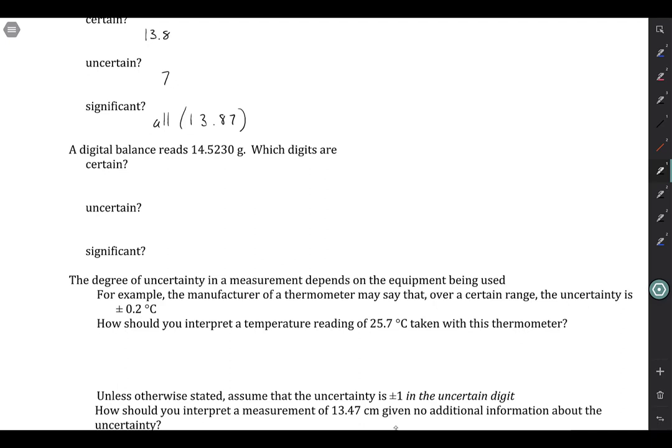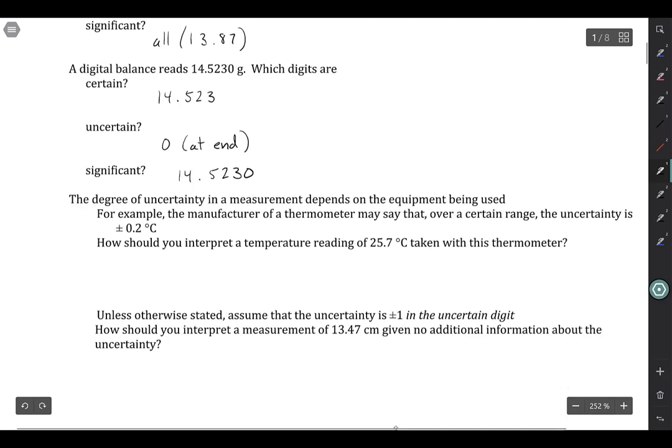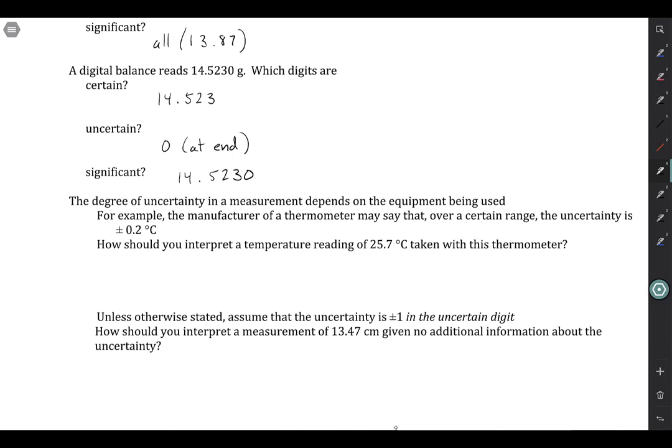What if we have a digital balance? Do the rules still apply? The answer is yes. Same procedure. All the digits except for the last one are considered certain, 14.523. Then that 0 at the end of the number is considered to be the uncertain digit. And then which of them are considered significant? All of them. So the 1, the 4, the 5, the 2, the 3, the 0.